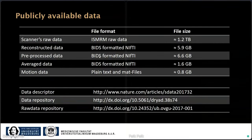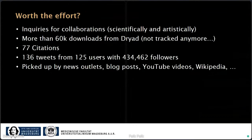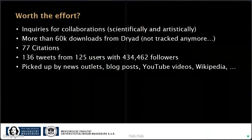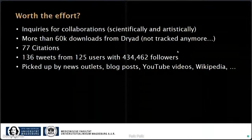It was quite challenging to format the data according to BIDS, as I didn't have any experience before that. However, it was worth the effort because we received quite a few inquiries for collaborations both scientifically and artistically. Since publishing the data in 2018 we have had more than 60,000 downloads from the Dryad repository, though tracking stopped about one and a half to two years ago, so numbers may be even higher. We received 77 citations, the article was mentioned in about 130 tweets reaching up to 430,000 followers, and it was picked up by news outlets, YouTube videos, and Wikipedia.